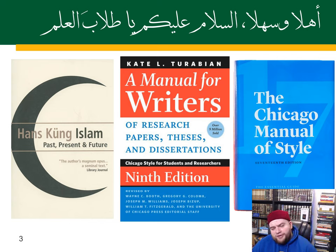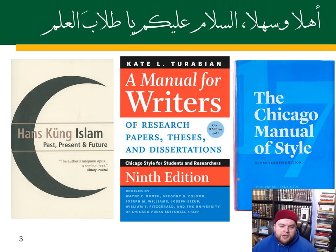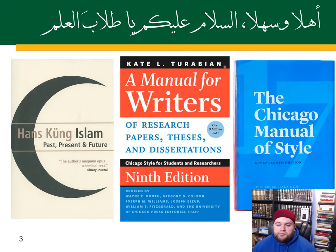I'm going to talk about the Chicago Citation Style, also known as the Turabian Style. These two books you can usually find PDFs of on the internet — it might be like an older edition, like the 7th or 15th edition — but you can definitely find them as PDFs, so I recommend you go look for those if you need more details about how to cite in the Chicago style.